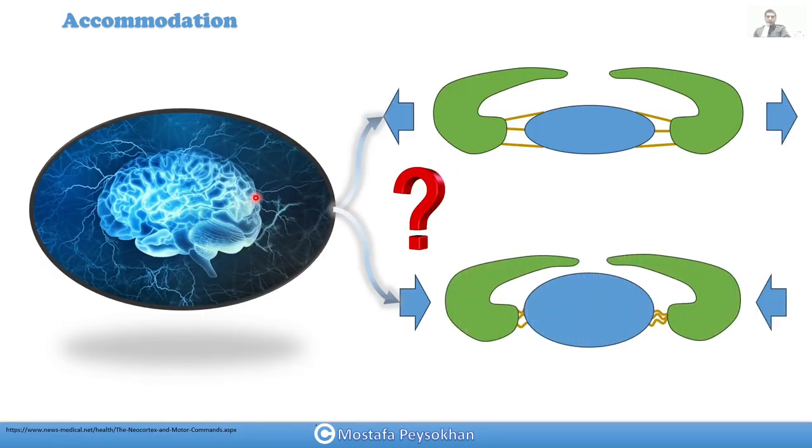So the question is how our brain decides about which direction should go, should do accommodation or should go relax. In the relaxed situation our lens is more flat so the power is low, and in accommodation our lens, the two ciliary muscles push the size of the lens.